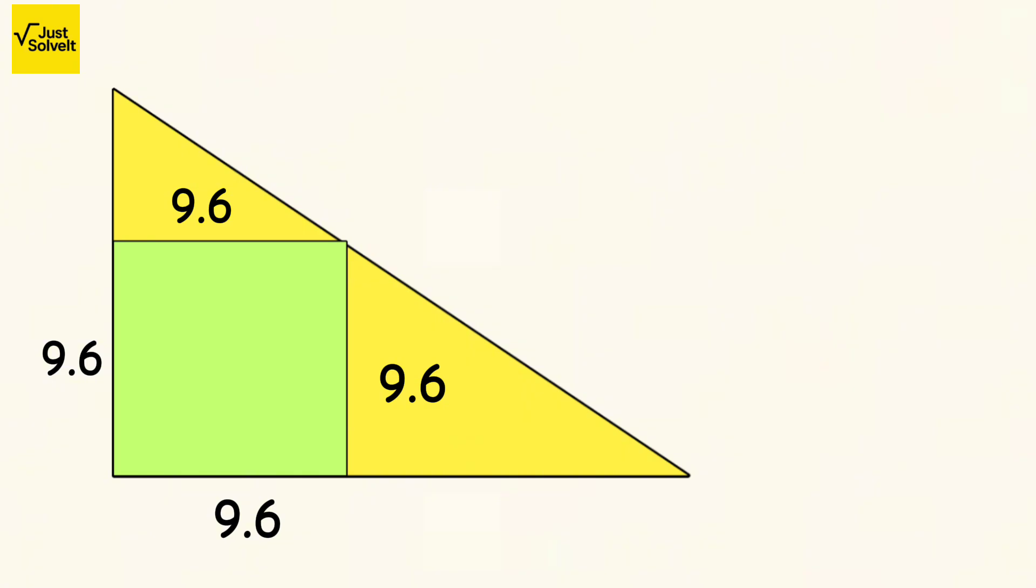That means the side length of the square is 9.6. Now find the area: 9.6 squared equals 92.16. So the area of the square is 92.16 square units, and that's our final answer.